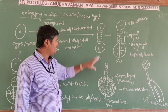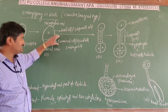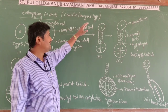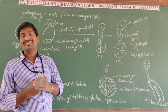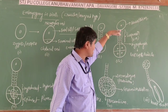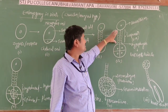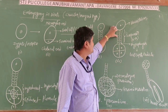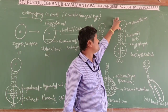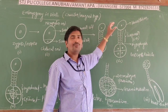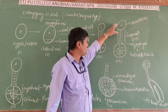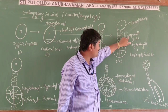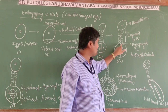Both basal and terminal cells divide simultaneously. The basal (suspensor) cell undergoes repeated transverse divisions, forming 6 to 10 suspensor cells. The last cell of the suspensor towards the micropylar end is known as the haustorium, which receives food material from the endosperm. The last cell of the suspensor towards the terminal cell is known as the hypophysis.